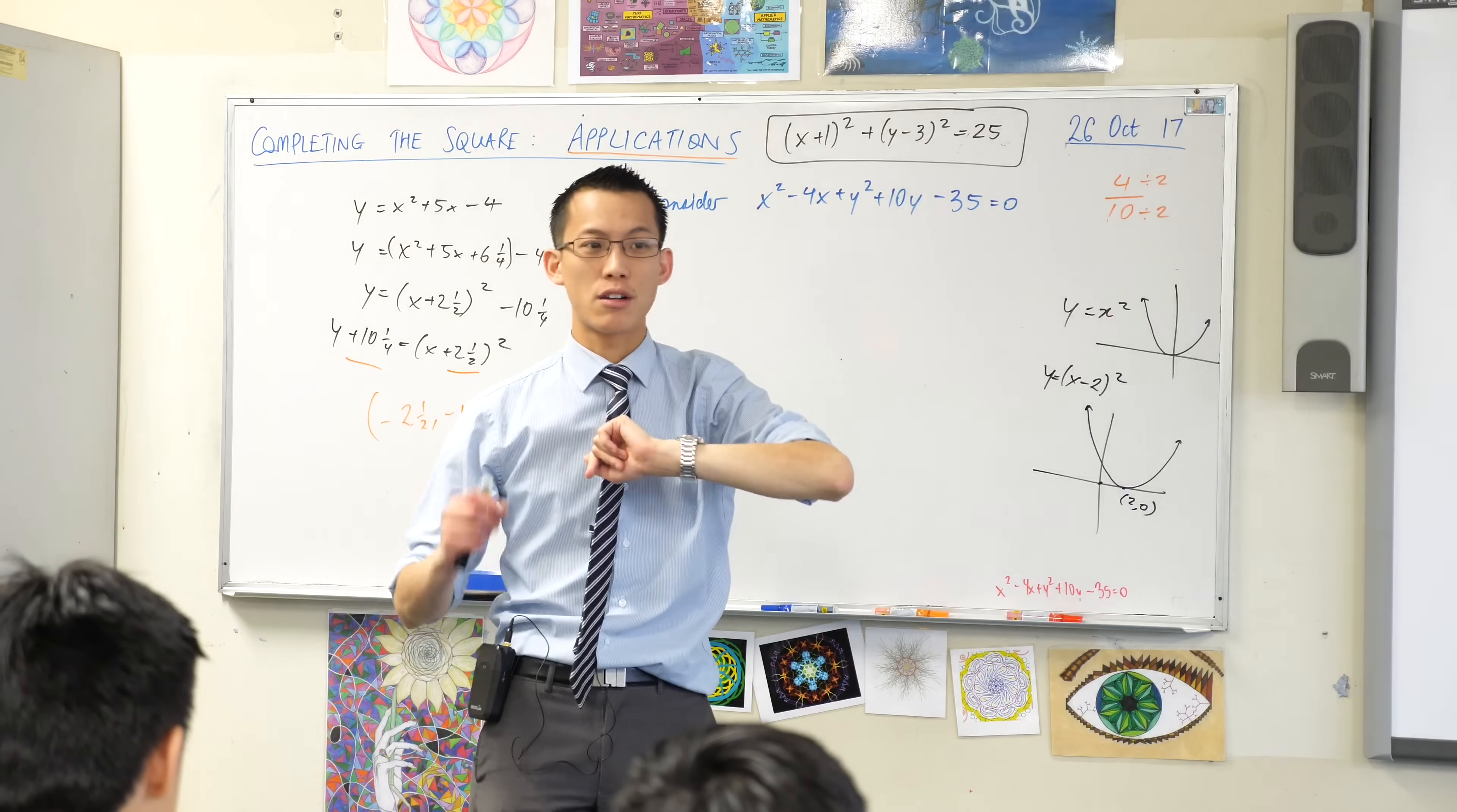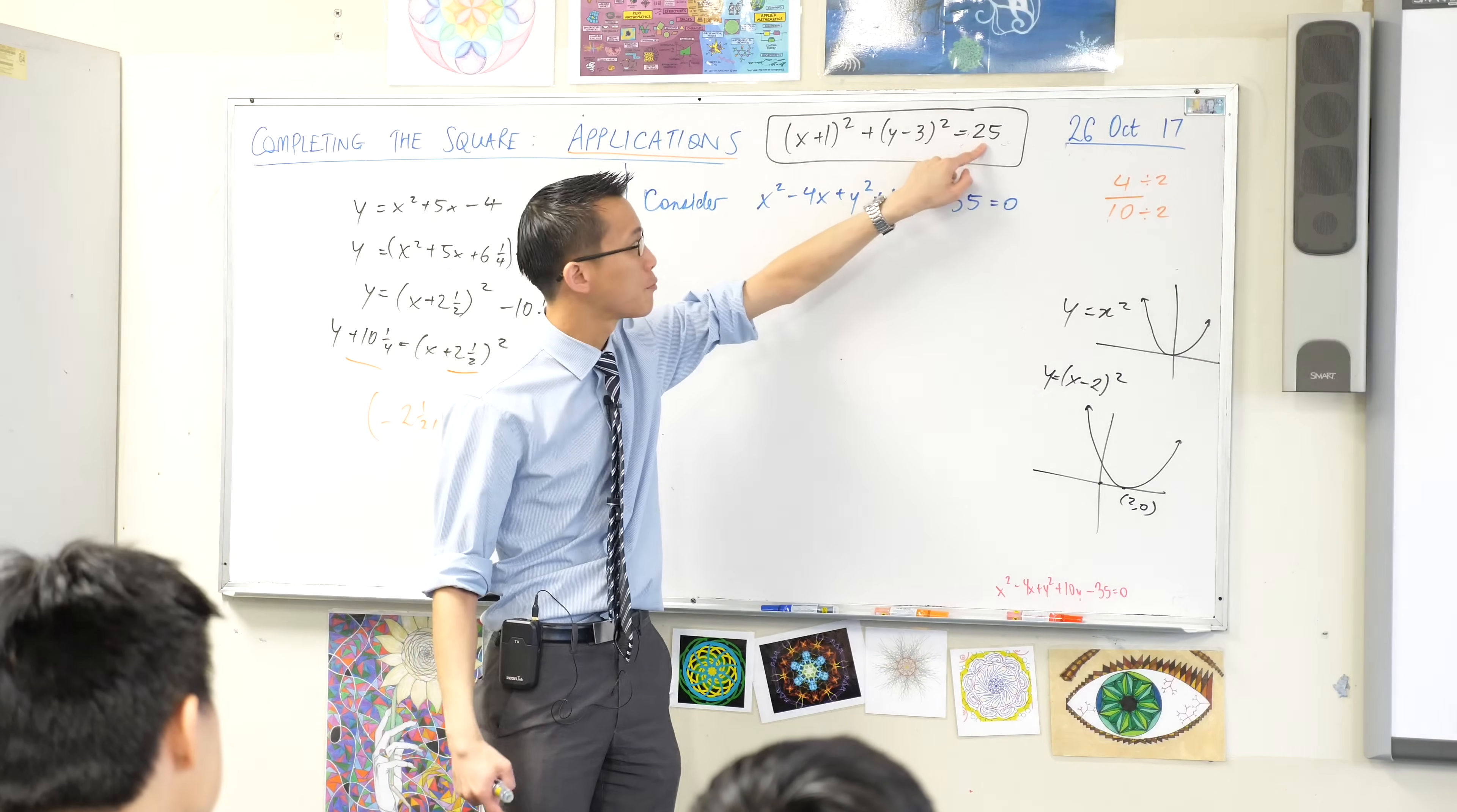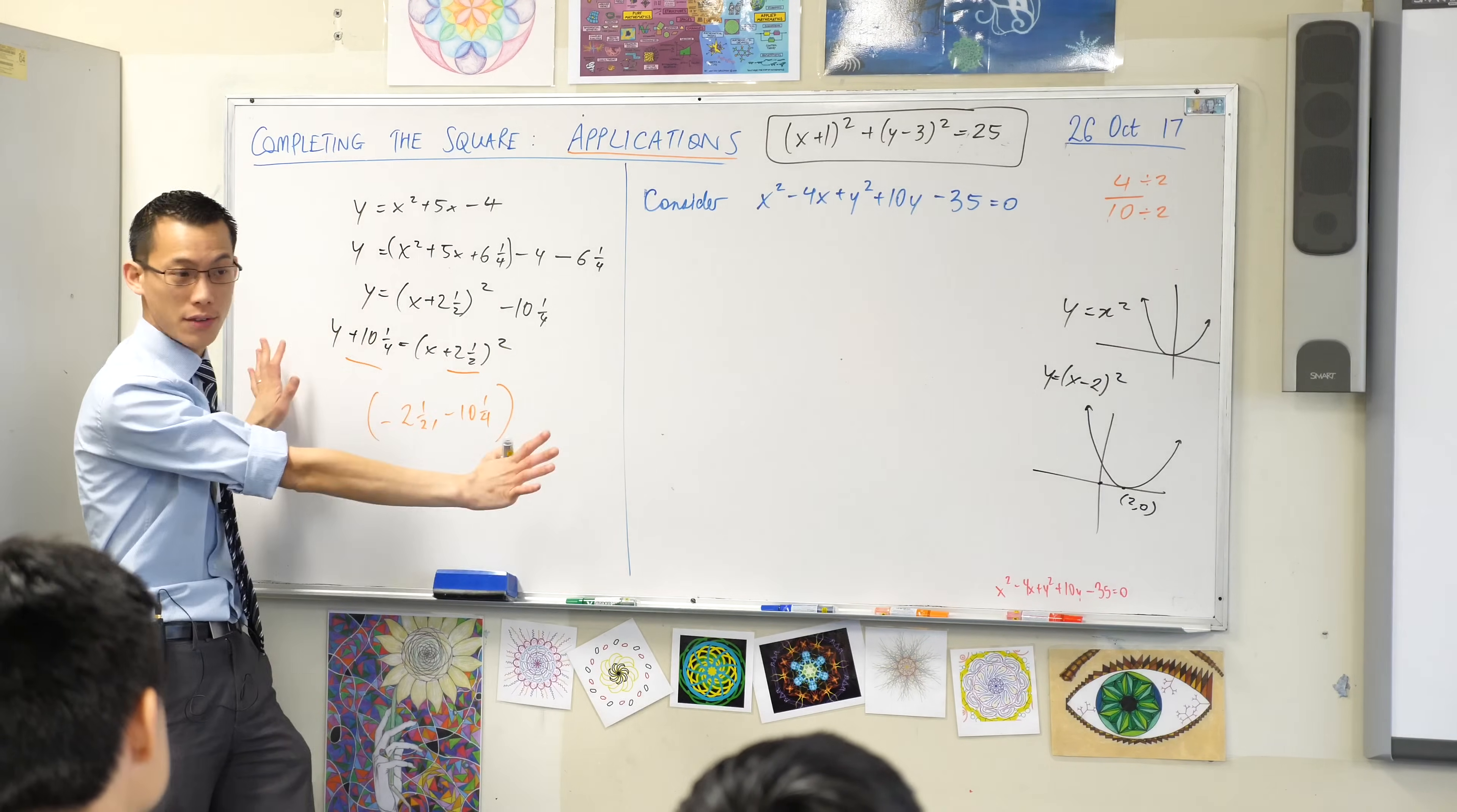Some of you might remember as well how to read off the radius of the circle. The radius is the square root of this number, so in this case it will be 5. Now, this is a nice, deep form. Just like this is a nice, deep form, you've got the numbers that are important just there on the surface.